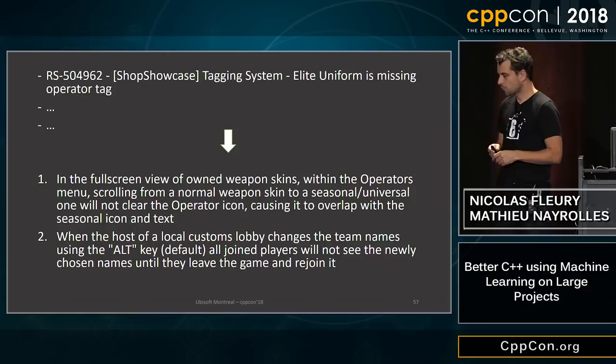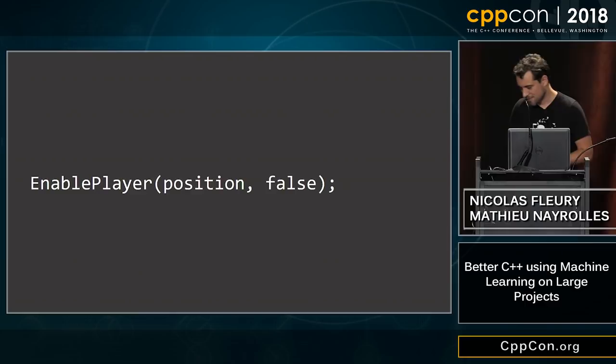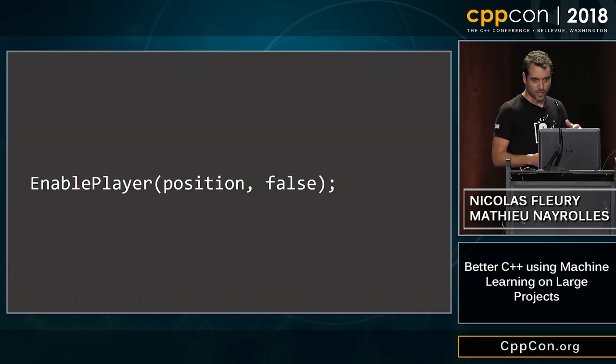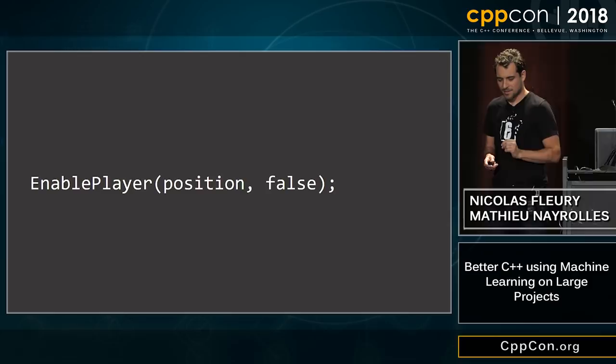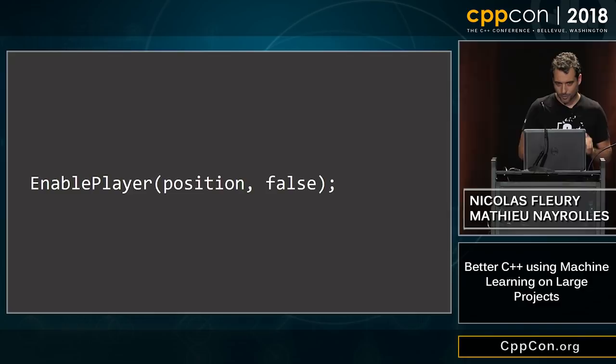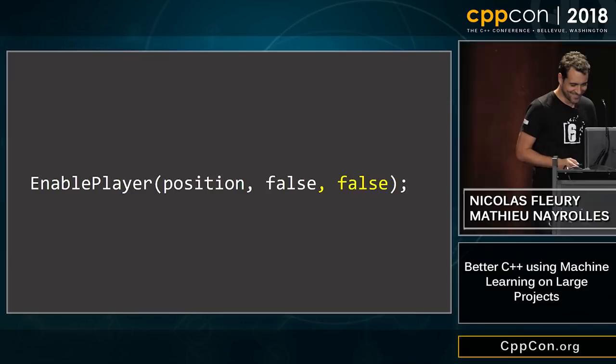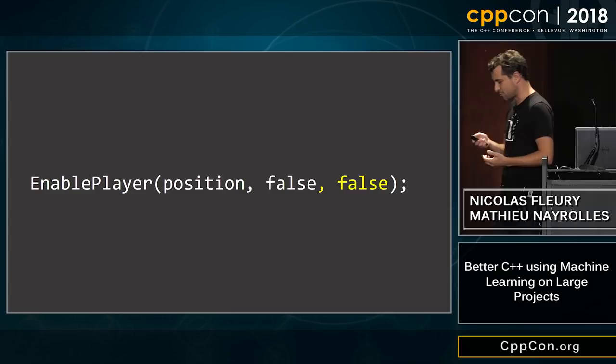What about code fix suggestions? This is where the tech is most promising. My feeling so far is that it's like a non-programmer giving you programming advice — but that non-programmer has seen a lot of code, so they can suggest both very stupid things and very insightful things. For example, here the system is telling you: 'hey, you should add a third argument here and pass false.' You look at the function definition and it doesn't even take three arguments.